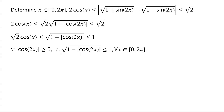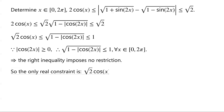This holds for all x in the closed interval [0, 2π]. This implies that the right inequality imposes no restriction. So the only real constraint is √2·cos(x) ≤ √(1 - |cos(2x)|).